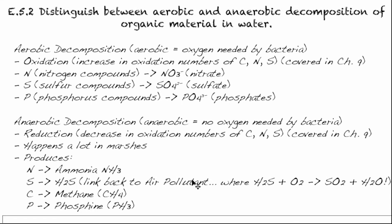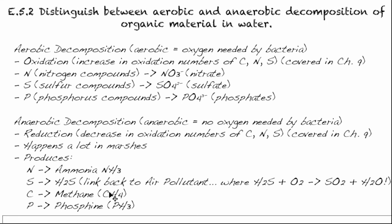You should link this back to our look at air pollutants — this is a natural source of air pollutants, where hydrogen sulfide from either this process or volcanoes reacts with oxygen to produce sulfur dioxide, and that can produce sulfur trioxide when it reacts with more oxygen. Carbon can be converted into methane, which is a greenhouse gas, so you can connect that back there, and phosphorus is converted into phosphine.